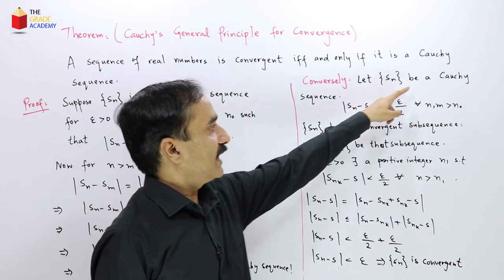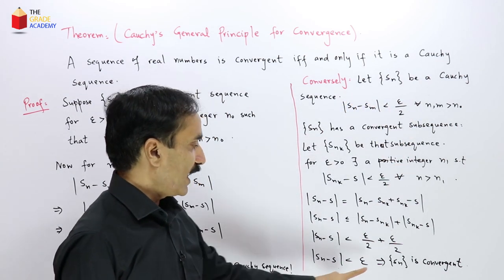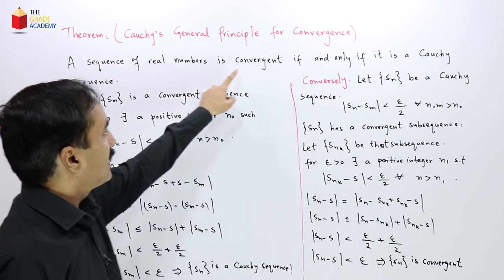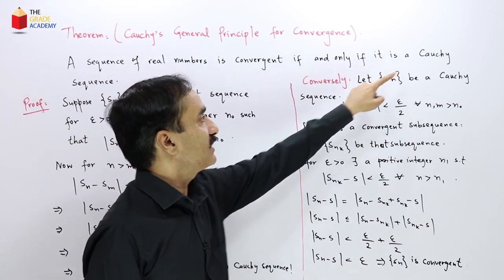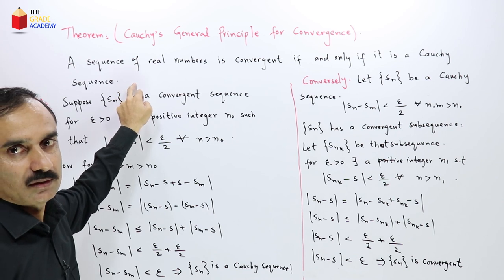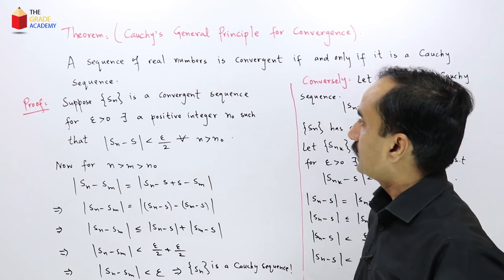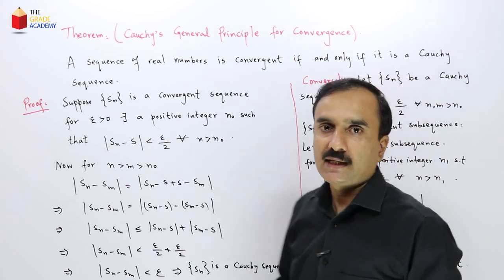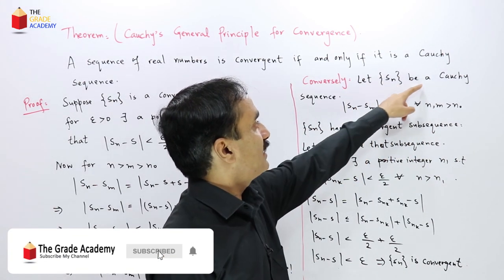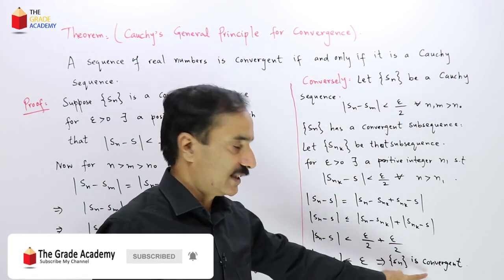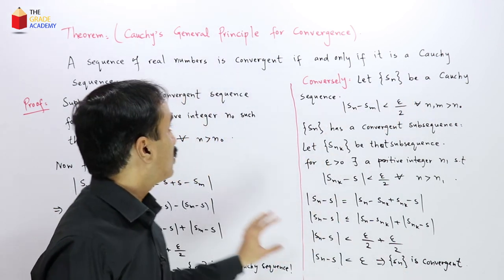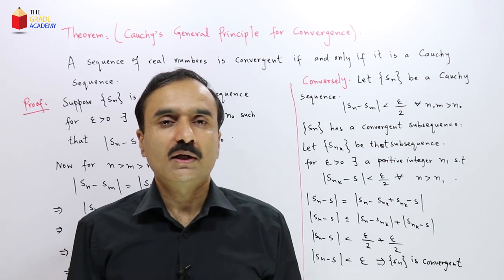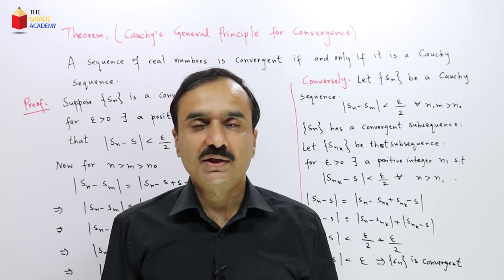So we supposed that Sn is a Cauchy sequence and proved that Sn is convergent. Thus, a sequence of real numbers is convergent if and only if it is a Cauchy sequence. First we proved convergent implies Cauchy, then conversely Cauchy implies convergent. This theorem is known as Cauchy's General Principle for Convergence, also called Cauchy's Criterion for the Convergence of a Sequence.